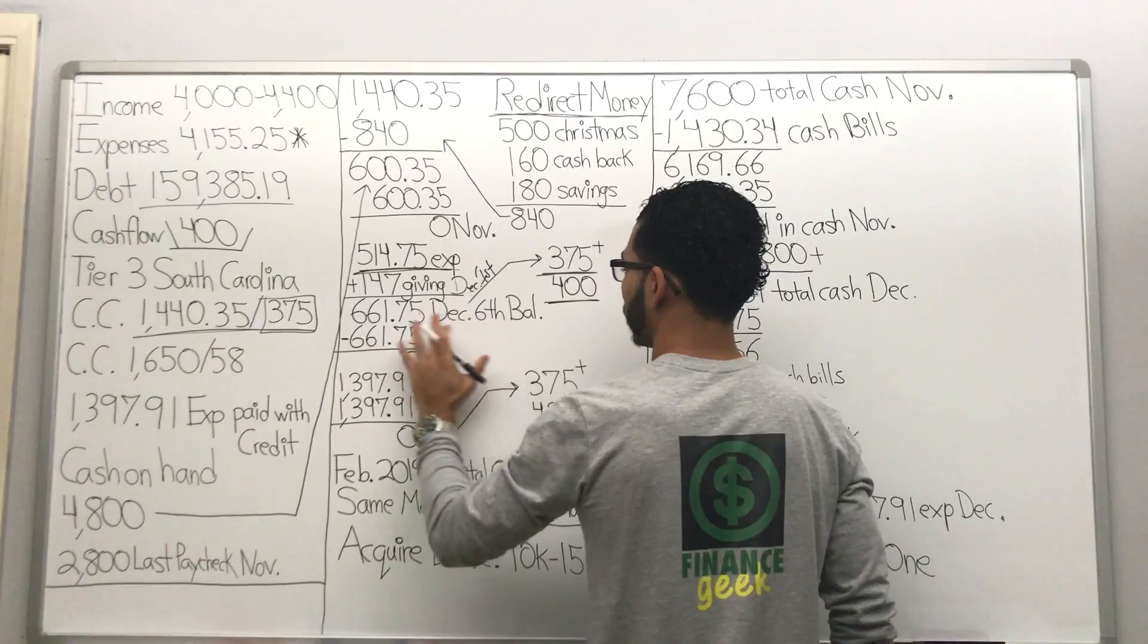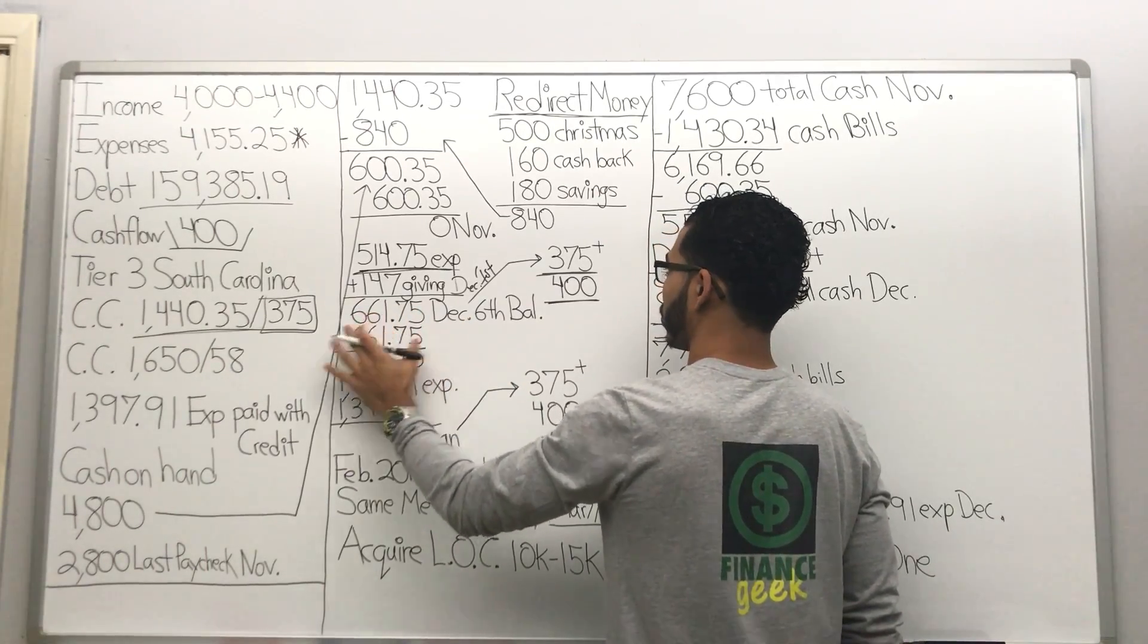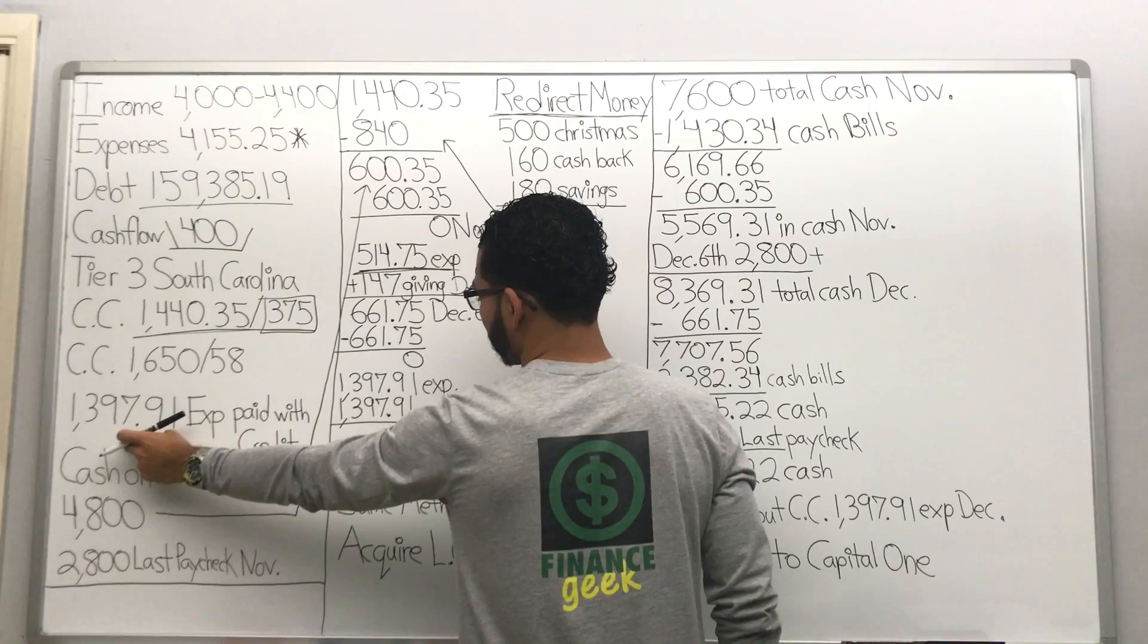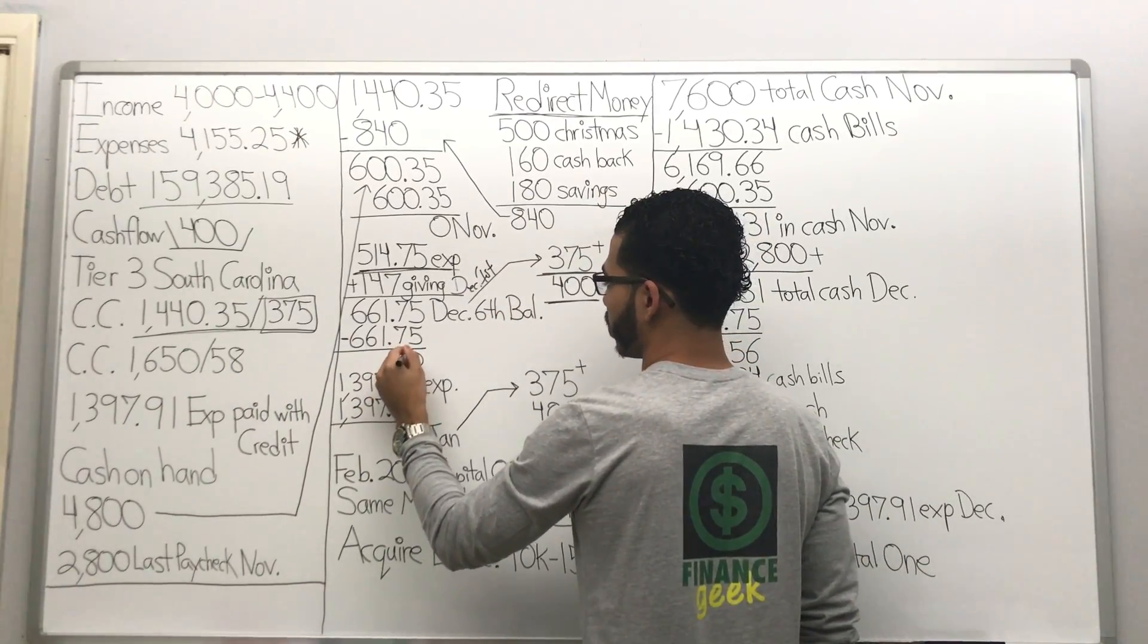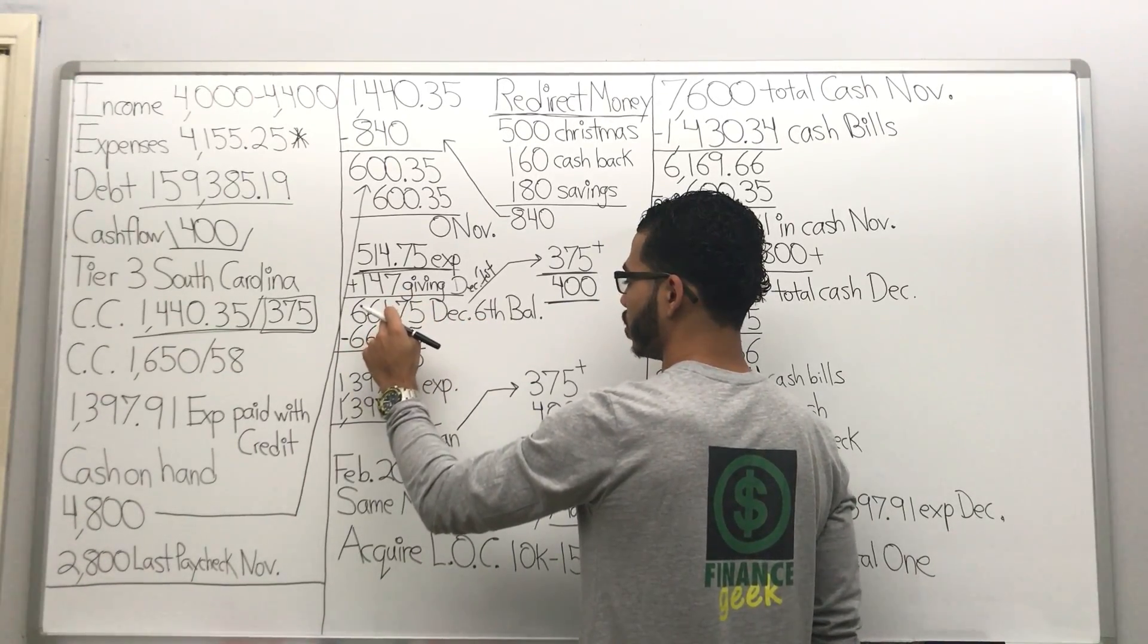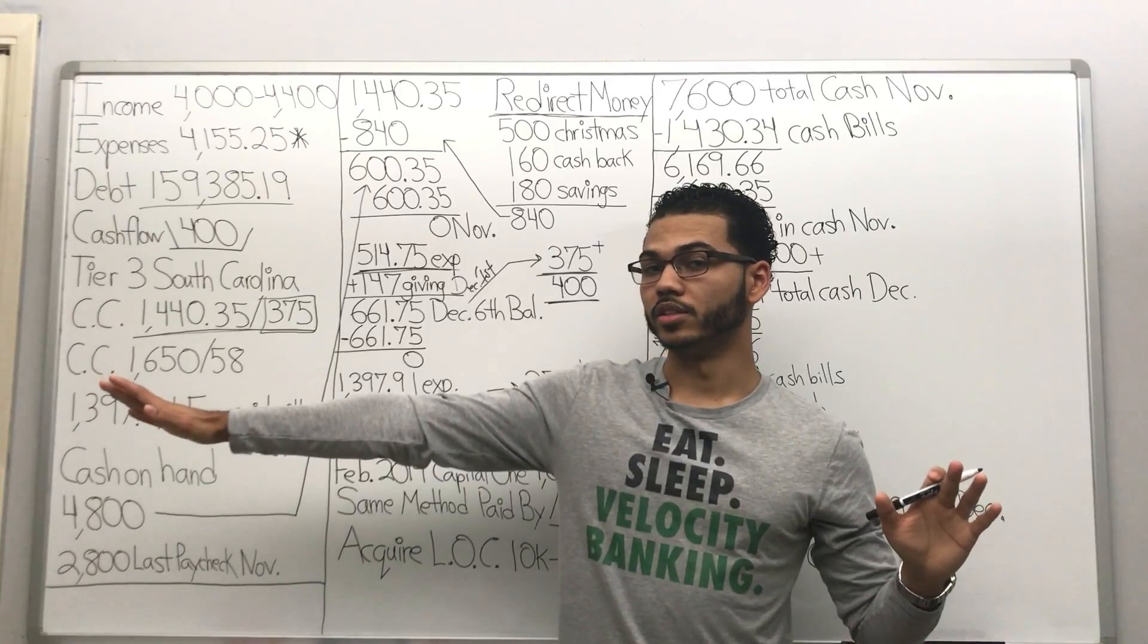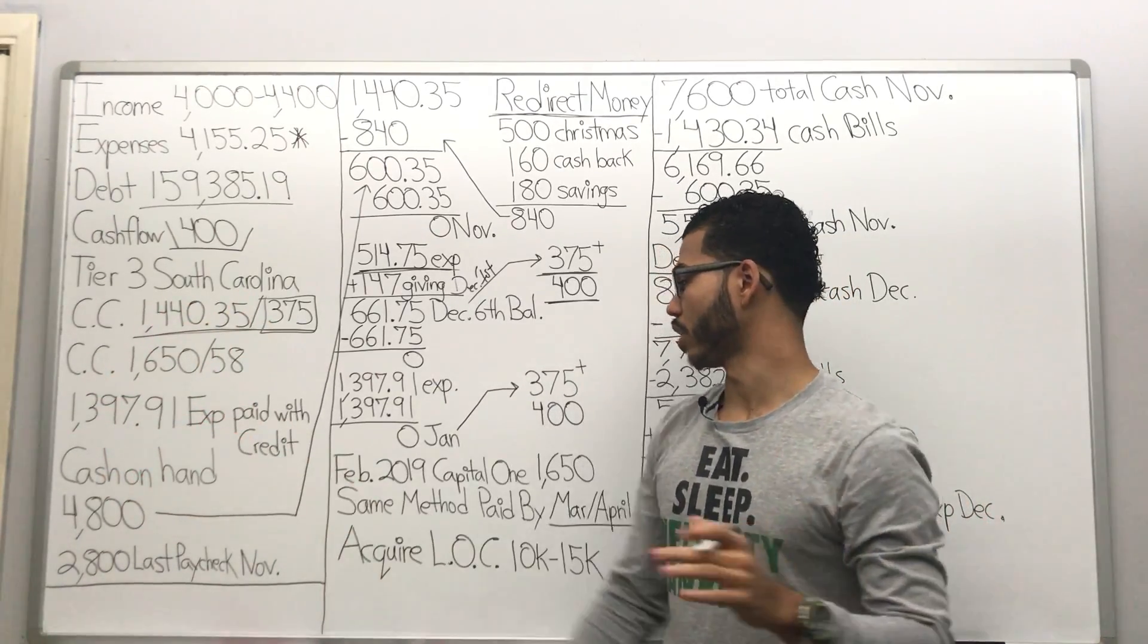Paid $661.75 on the credit card. What am I gonna do? Credit that I can pay with expenses, $1,397.91. After I made a chunk in December 6 to zero out this, we're gonna pay $1,397.91 of expenses throughout the month of December.